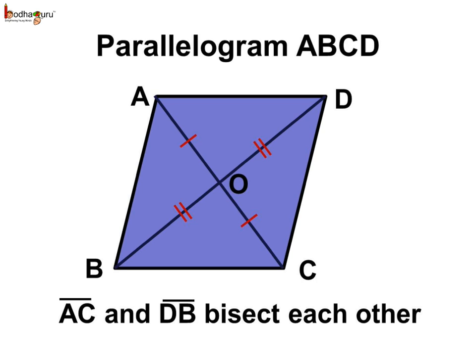This means the diagonals bisect each other — that is, they divide each other into two equal parts. Hence line segment AO equals line segment OC, and line segment BO equals line segment OD. So in short, the two diagonals bisect each other.